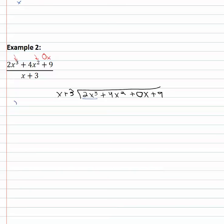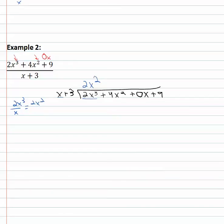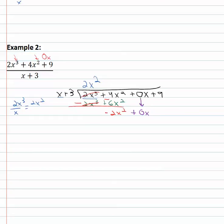Same process again: take the front term, two x cubed, and divide out an x. That leaves us with two x squared. Distributing onto each term gives us two x cubed plus six x squared. Then we change the sign on both terms so the two x cubed terms subtract out to zero. Four minus six is negative two x squared, and we'll bring down the next term, the plus zero x. Repeating: negative two x squared divided by x leaves us with negative two x.